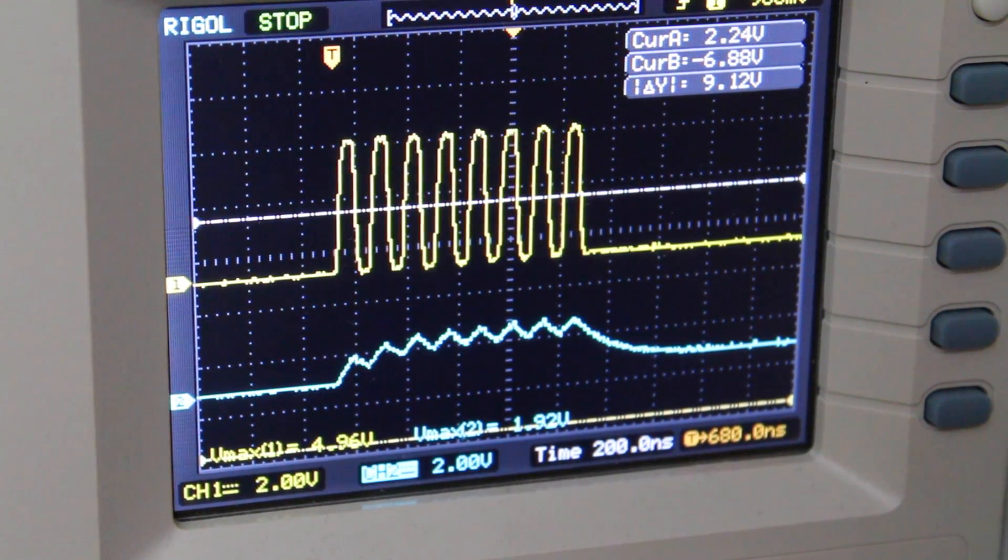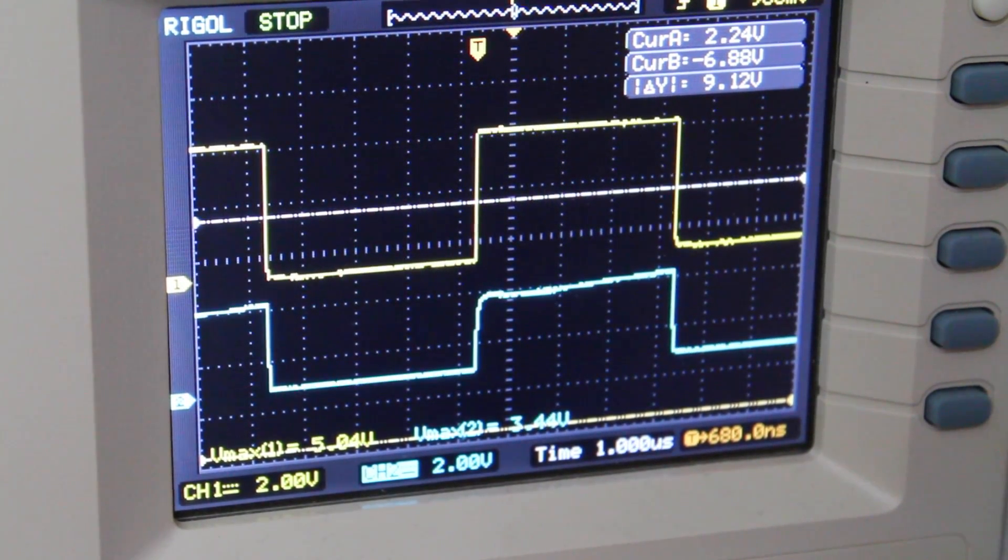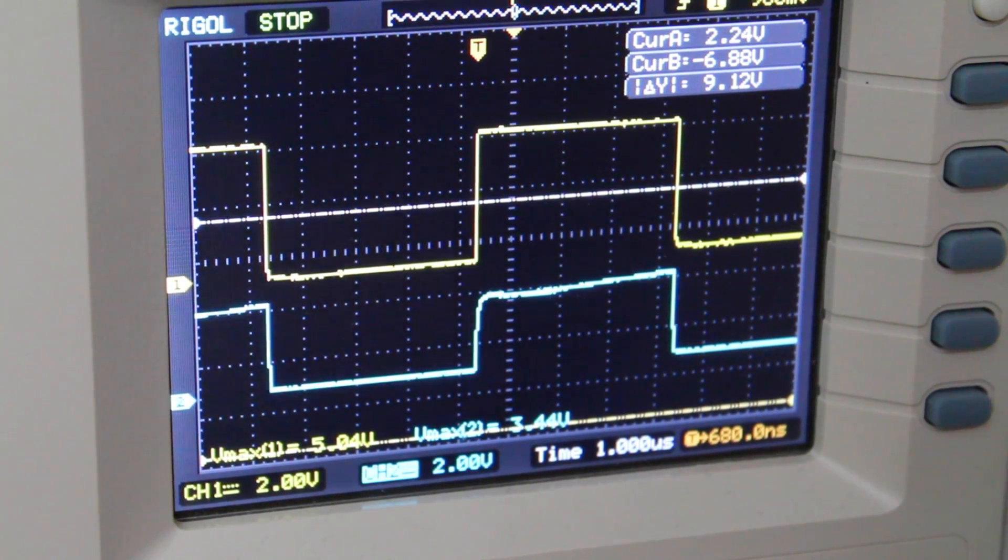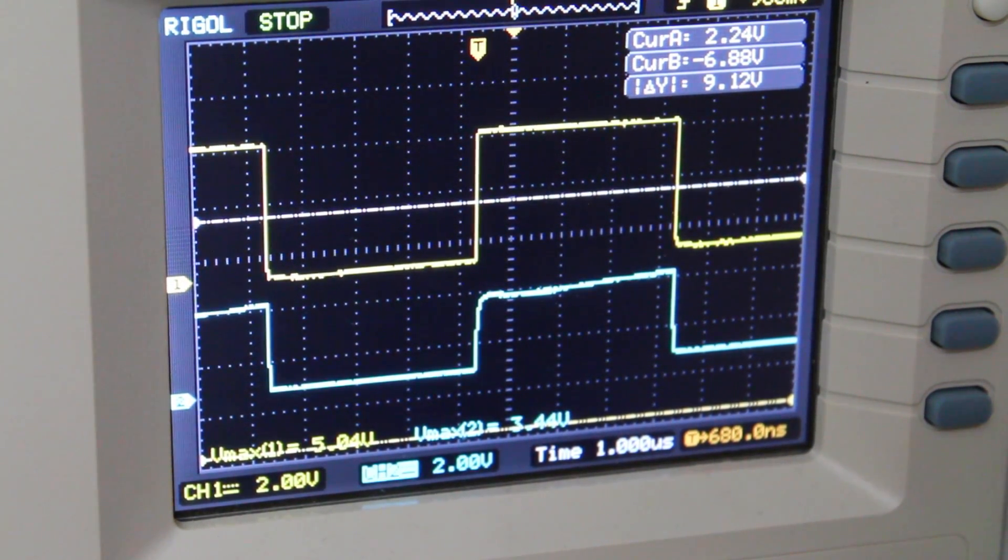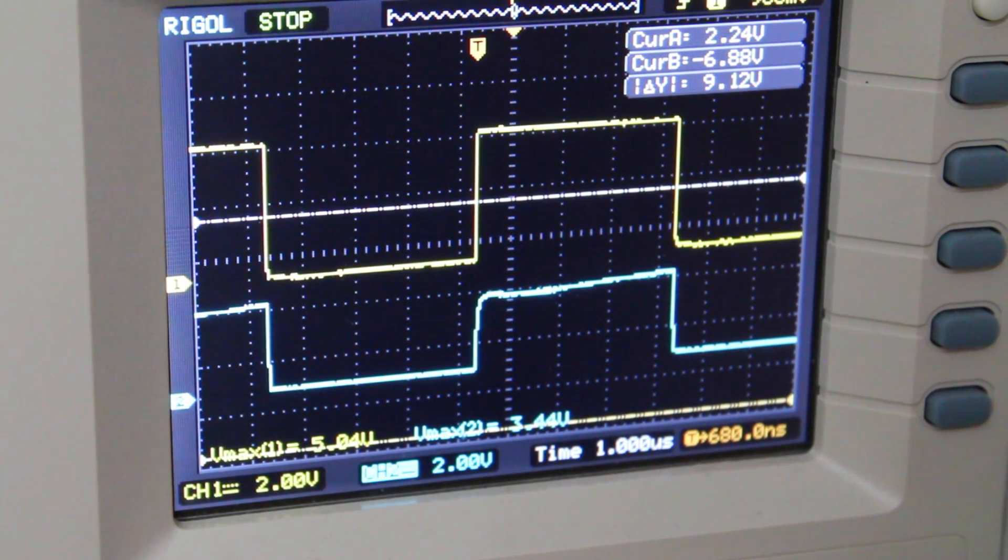Here's the transistor method. I've lowered the frequency back down to 125 kilohertz. You can see the output looks pretty good, tracking the input nicely. We've reduced the rise and fall time dramatically from the resistor method.